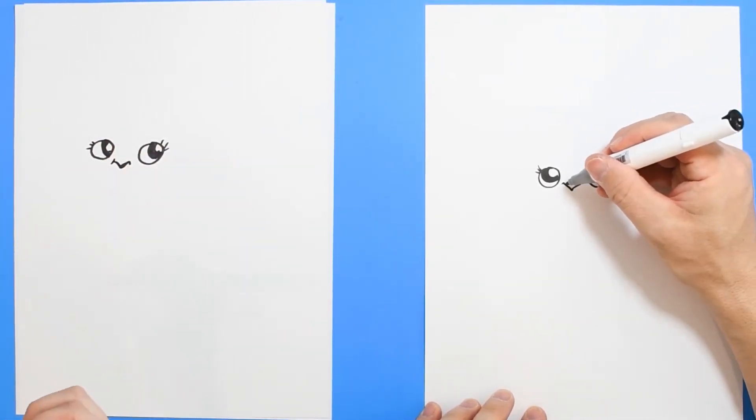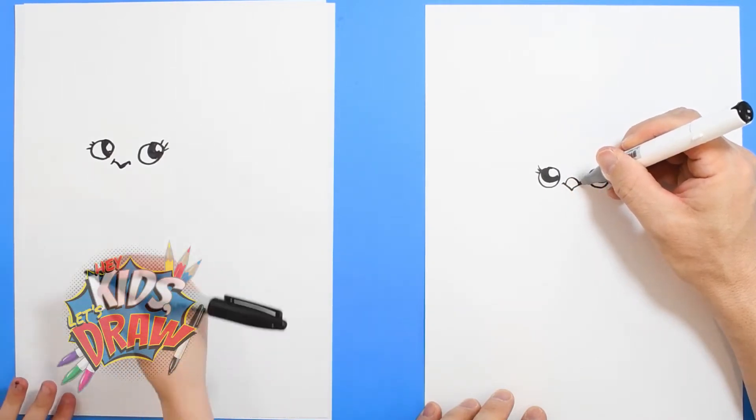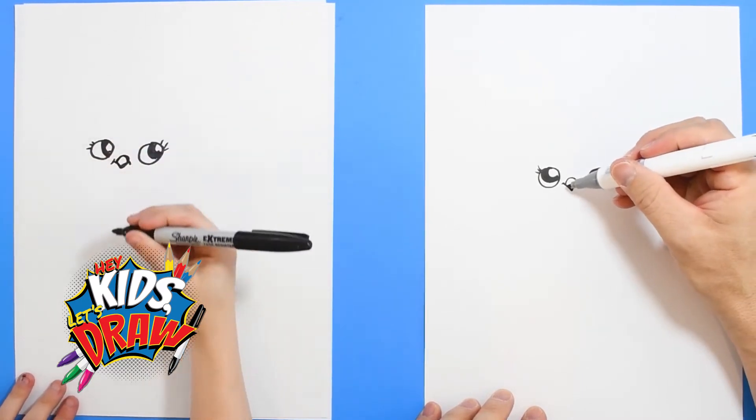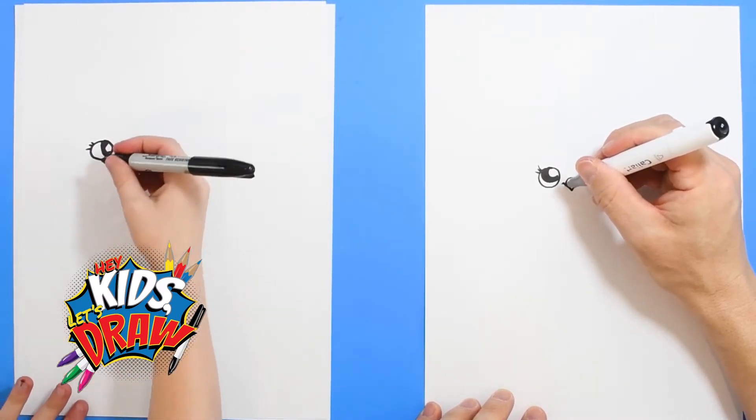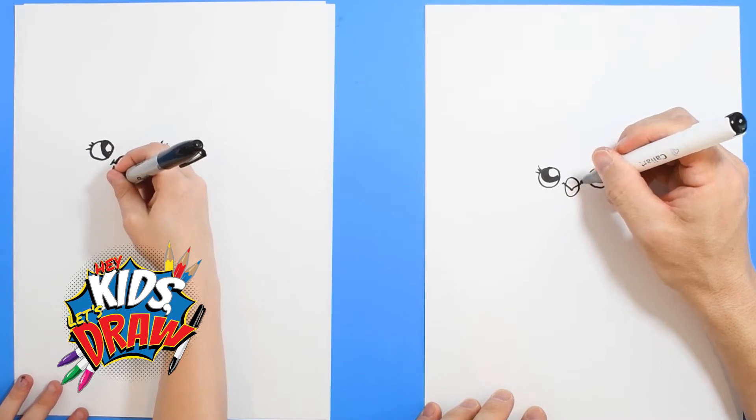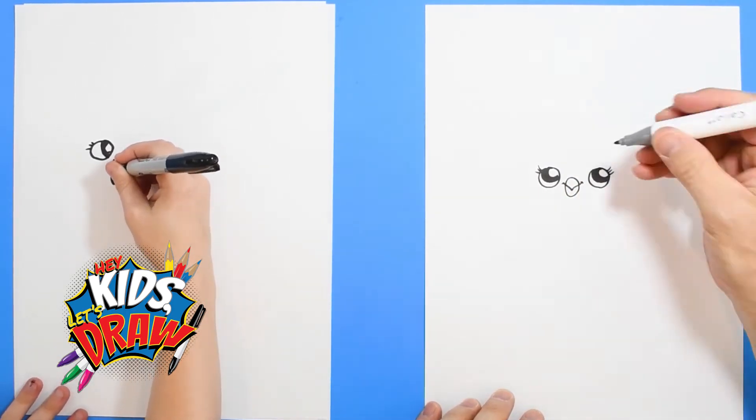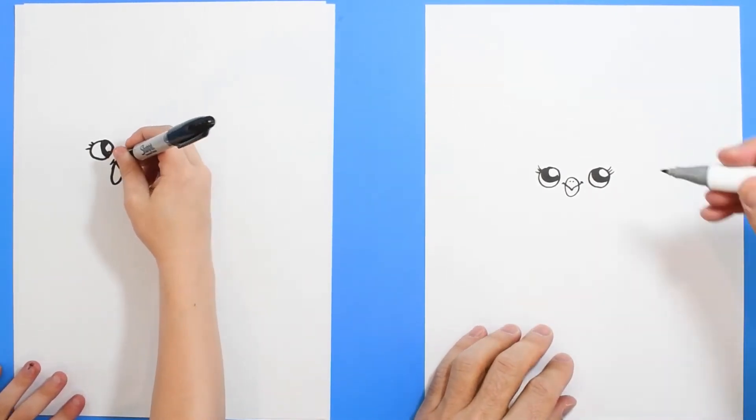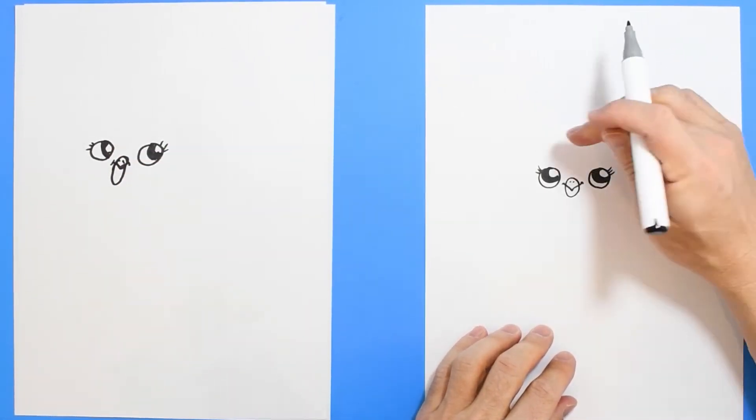From this, do a kind of a rainbow shape, and then at the bottom we're going to do a big U shape. Add a couple of dots for the beak.